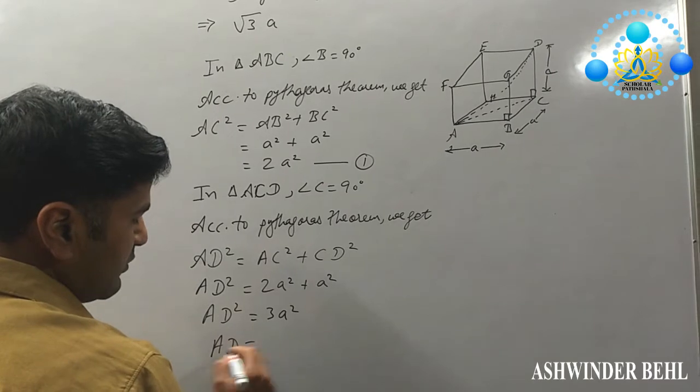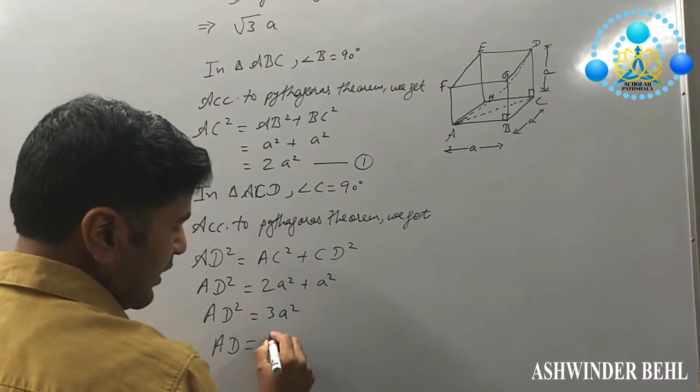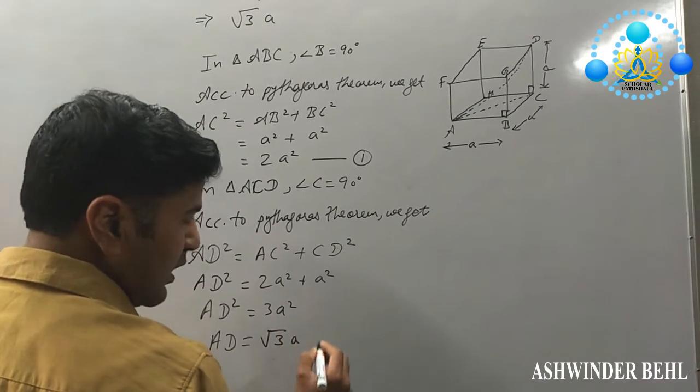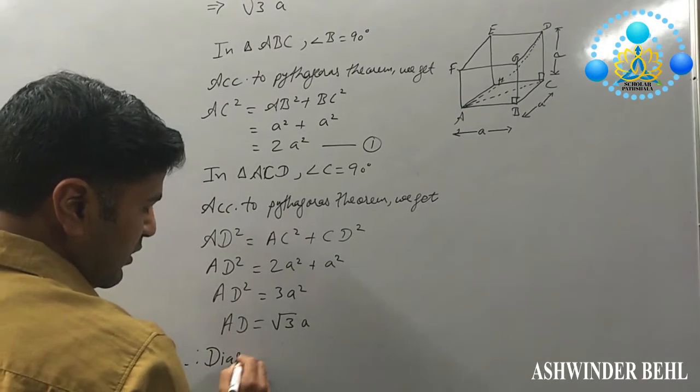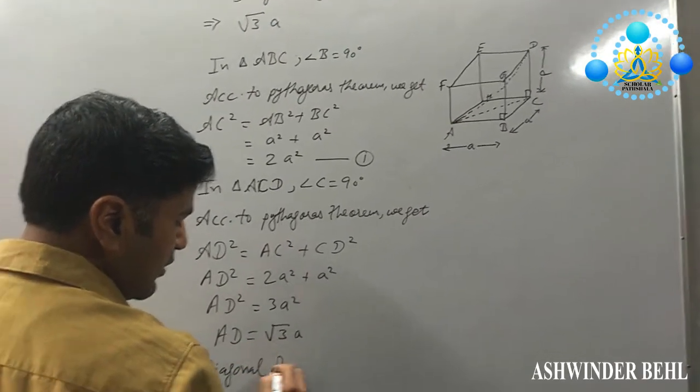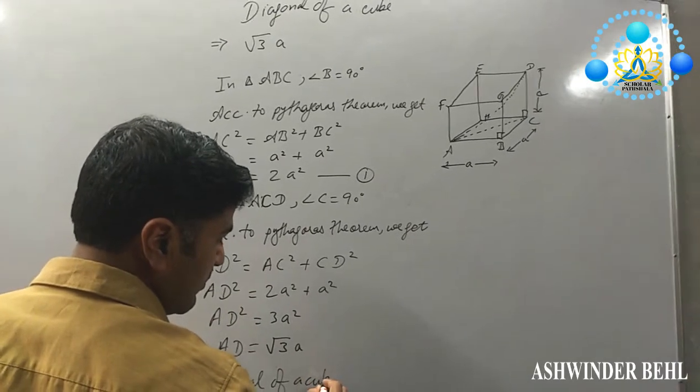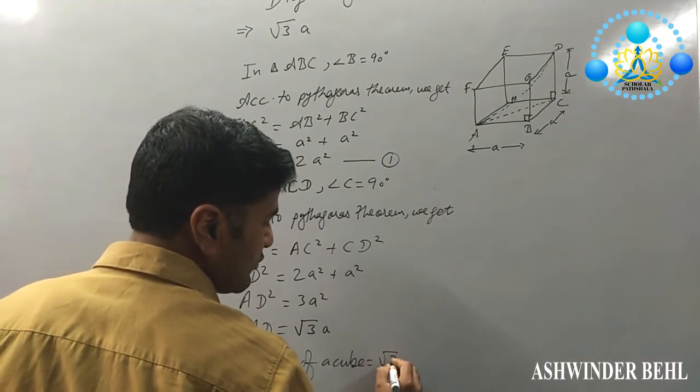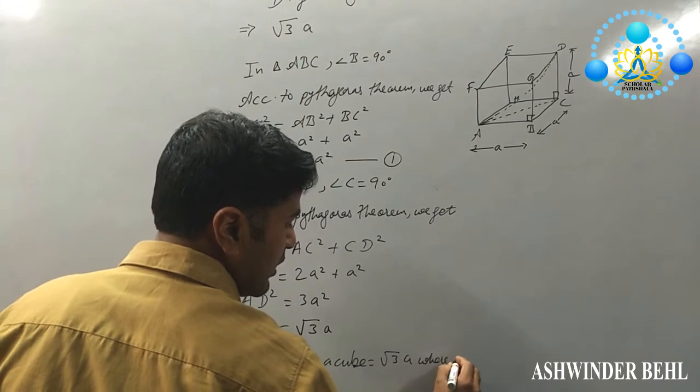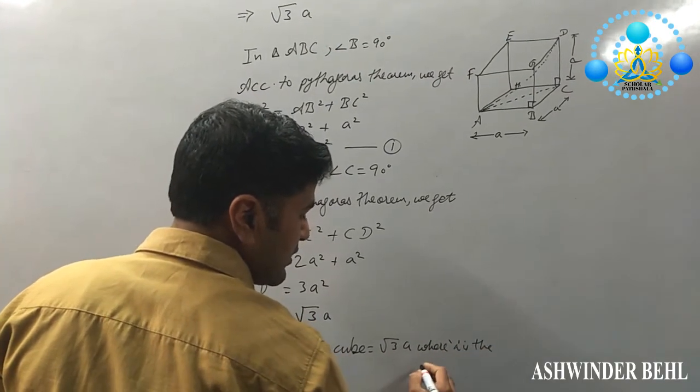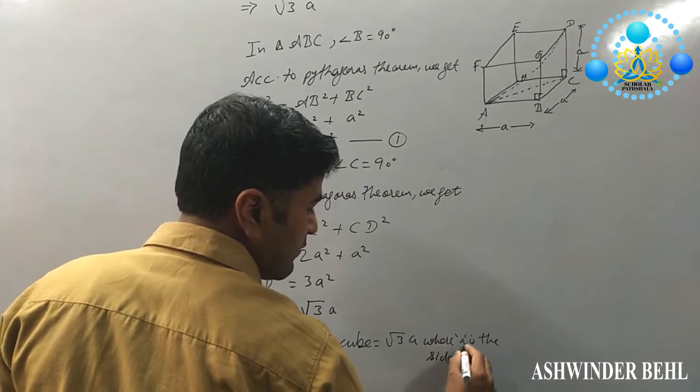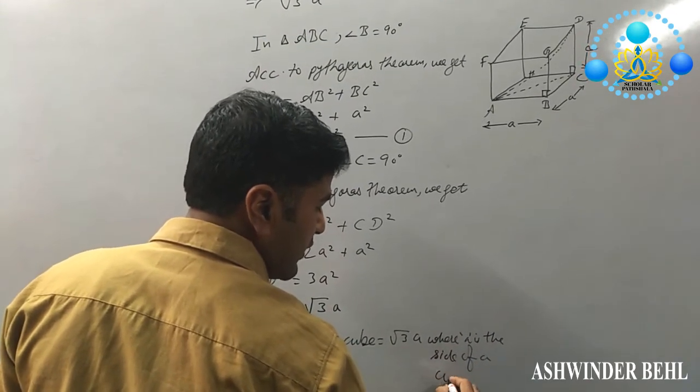Now, we can find out the value of AD, that is √3A. Therefore, the diagonal of a cube is √3A, where A is the side of the cube.